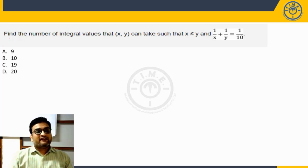Find the number of integral values that x, y can take such that x is less than or equal to y and 1/x plus 1/y equals 1/10. The same thing can also be written as, after simplification by taking LCM, x plus y by xy equals 1/10.